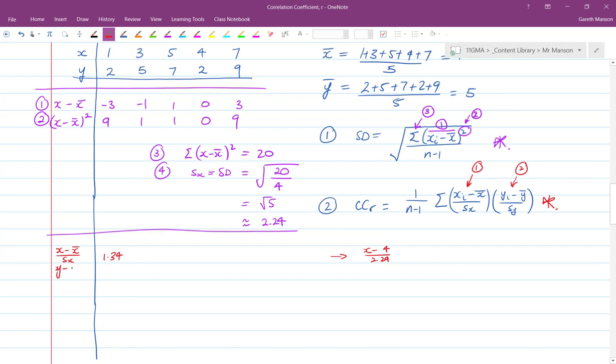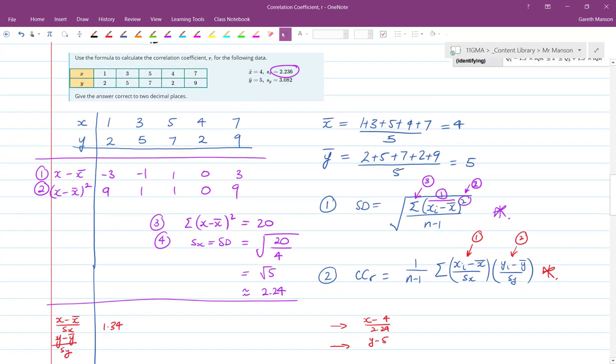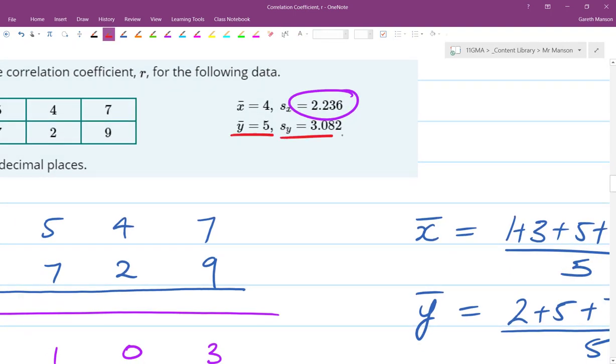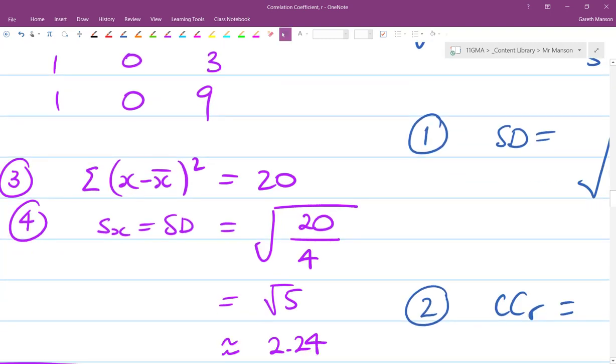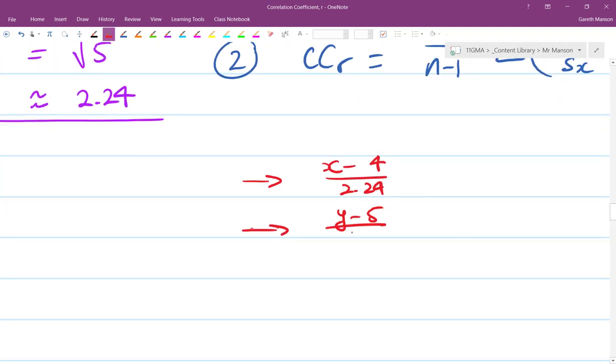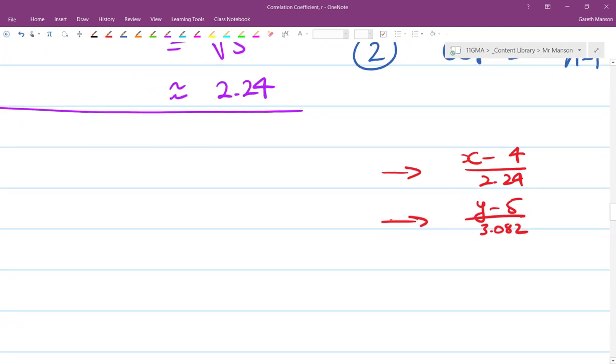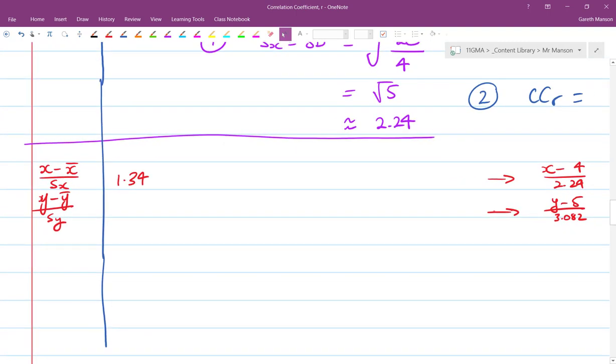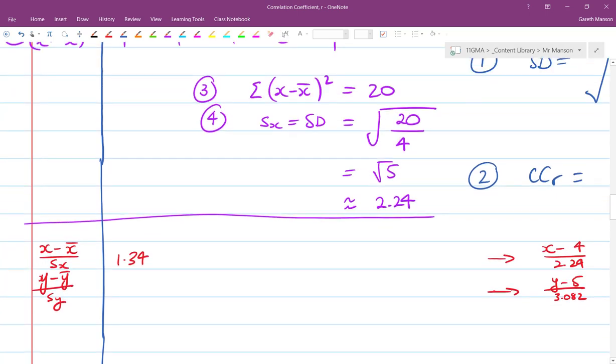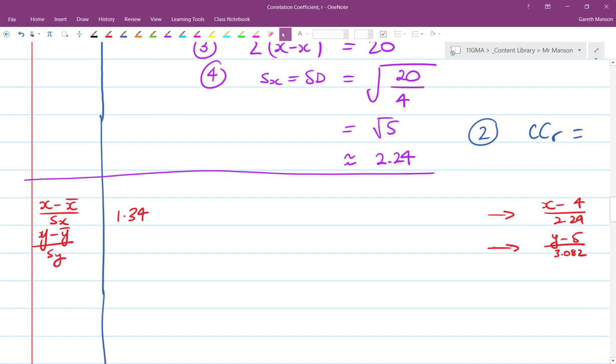And my next line, y minus y bar over Sy is equal to y minus 5, remember these values we're given are up here, so 5 and 3.082. So y minus 5 over 3.082. I'm going to do that calculation for the y value for this pair of values that match together, and I'm going to do that multiplication as well. This is a bit trickier, but it is still just a formula that's given to you. So y is 2, so I get 2 minus 5 over 3.08, that's negative 3 divided by 3.08, and that gives me negative 0.973.